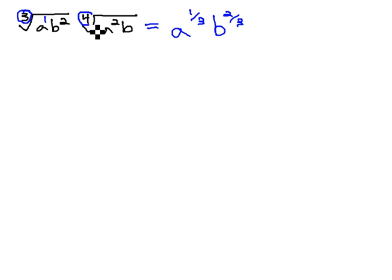Similarly, under the fourth root, we've got a squared and b to the first. The a squared becomes a to the two-fourths, and the b to the first becomes b to the one-fourth. If we want to combine these together under a single a or a single b, what we need to first do is get a common denominator on our fractions so that we can add the fractions together.